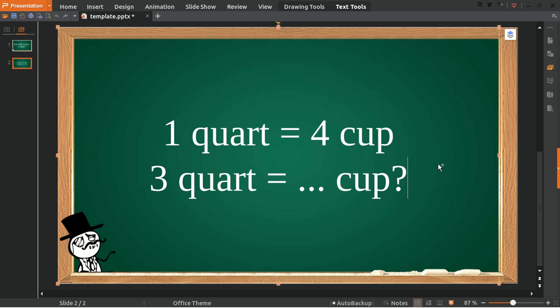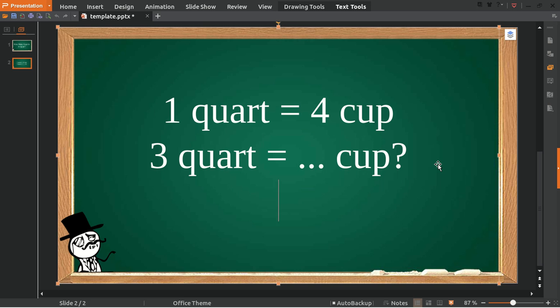To answer this question, the first thing you need to do is put an equal sign. This is the question, right? Three quarts. So you need to put three on the left side of the equal sign and the right side, and then you multiply it with one quart.